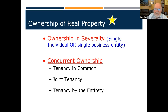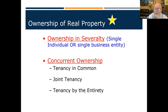Ownership in severalty is a bit contradictory — 'several' usually means more than one, but here it means we've severed relations with everybody else and there is one owner. I own 123 Main Street. It's mine alone — I don't have to share it, don't need anyone's permission, and can leave it to whoever I want. That's ownership in severalty: one person owns it.